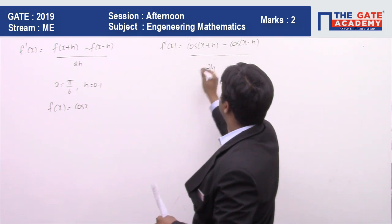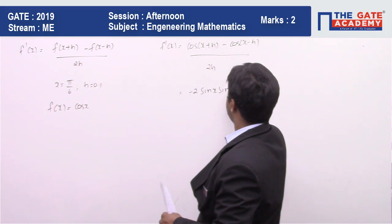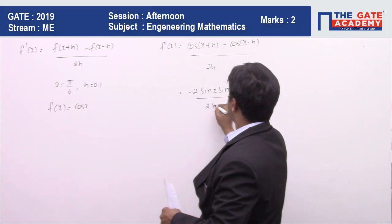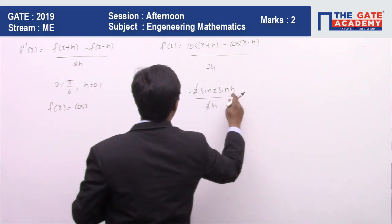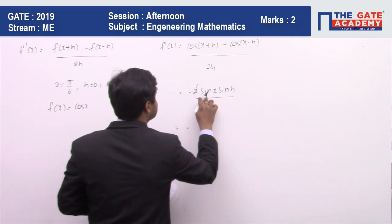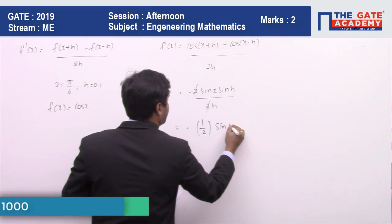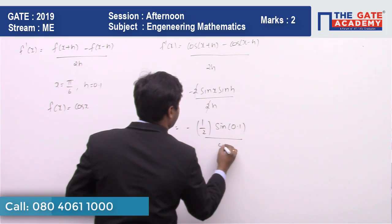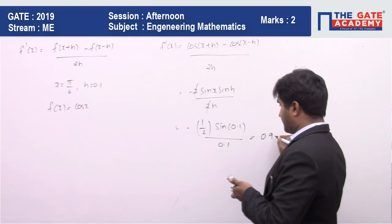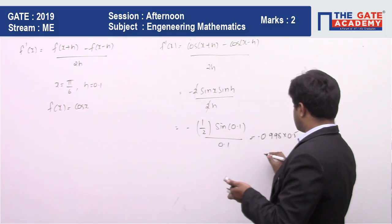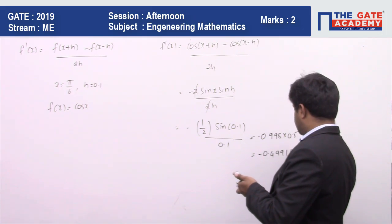If you calculate this one it will come to -2sin(x)sin(h) / 2h. Two and two get cancelled out. If you put the value of h = 0.1, -sin(π/6) is nothing but 1/2 and sin(0.1) / 0.1. This value comes to 0.998 multiplied by 0.5 with a minus sign. So this value is going to be -0.49916.